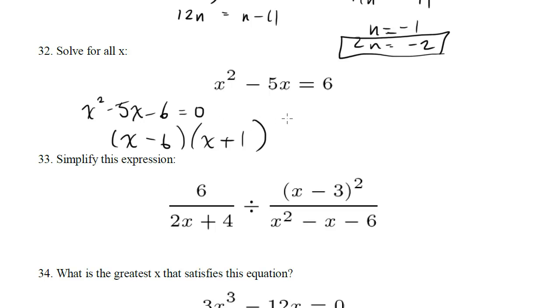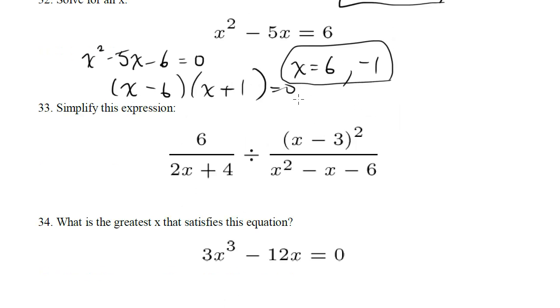So now we get x must equal 6 or negative 1, because this must equal 0. Either one of these factors can equal 0, so we get that when both x is 6 or x is negative 1. So those are our answers for that one.